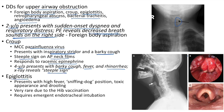Epiglottitis: presents with high fever, sniffing dog position, toxic appearance, and drooling. Caused by Haemophilus influenzae; very rare due to Hib vaccination. Requires emergent endotracheal intubation. This picture shows the thumb sign seen in epiglottitis. Another picture shows inflamed epiglottitis, and the same after treatment with antibiotics.